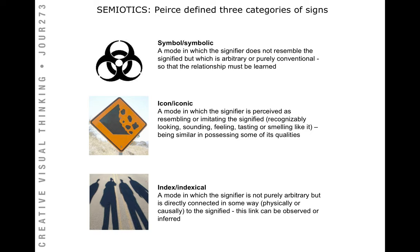Peirce defined signs into three categories: symbols, icons, and index. A symbol is where the signifier does not resemble the signified — that relationship has to be learned. In other words, the image doesn't look like what the meaning is, and unless we know or have learned that relationship before, we won't know what it stands for.